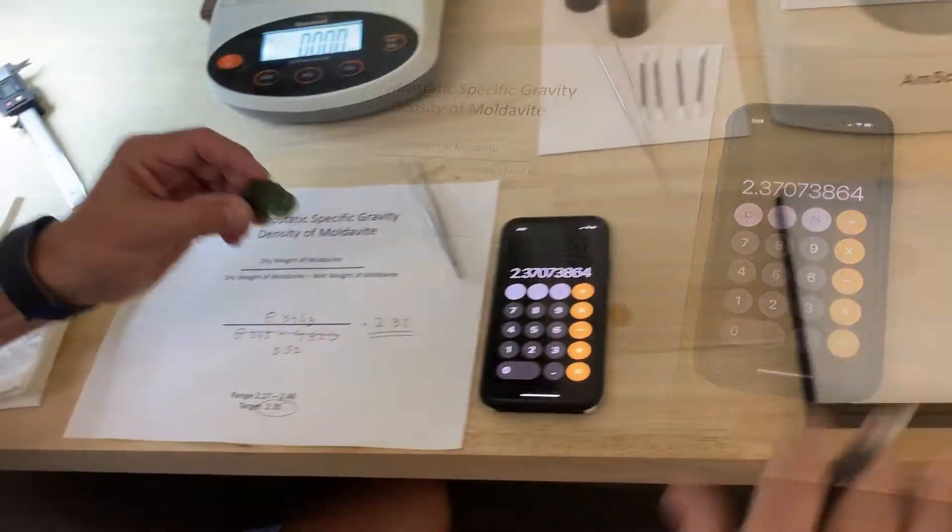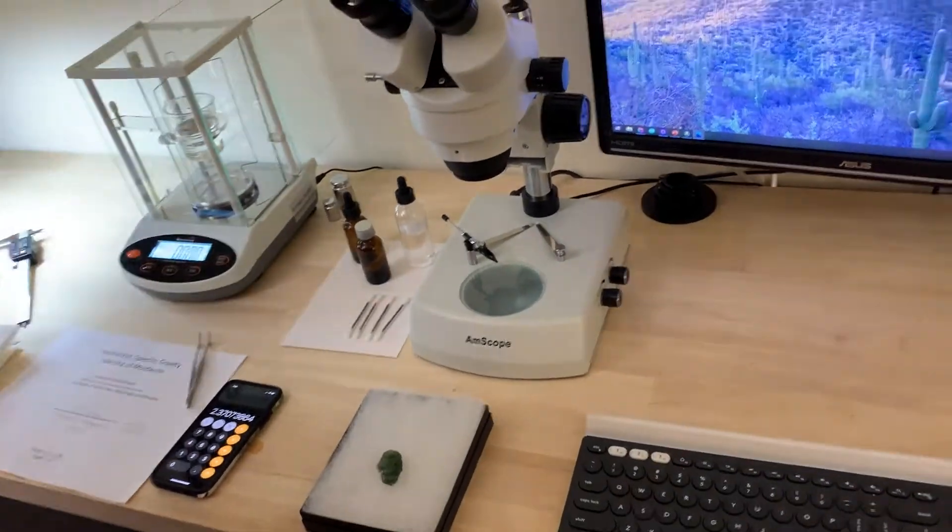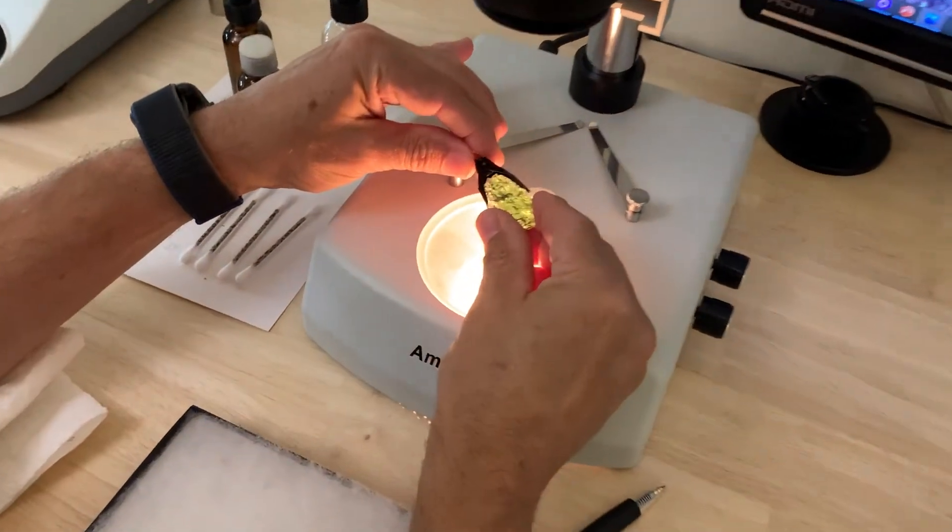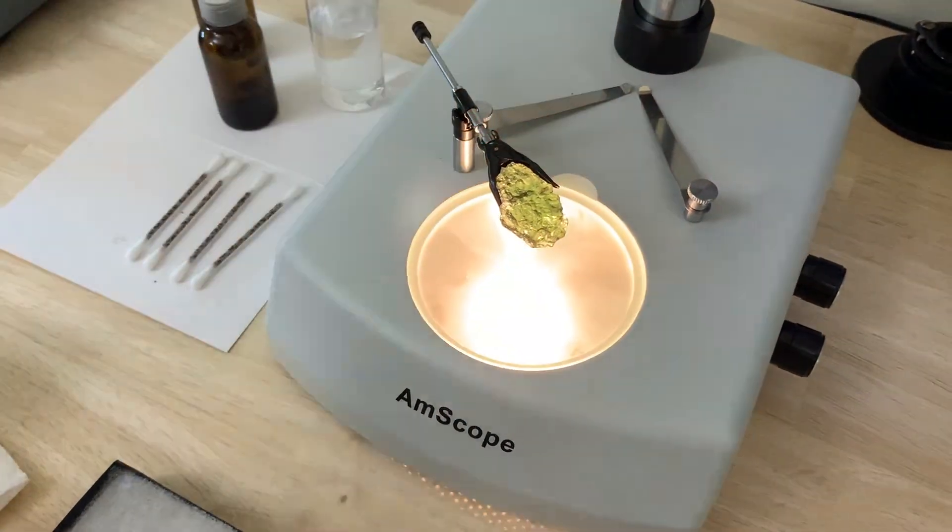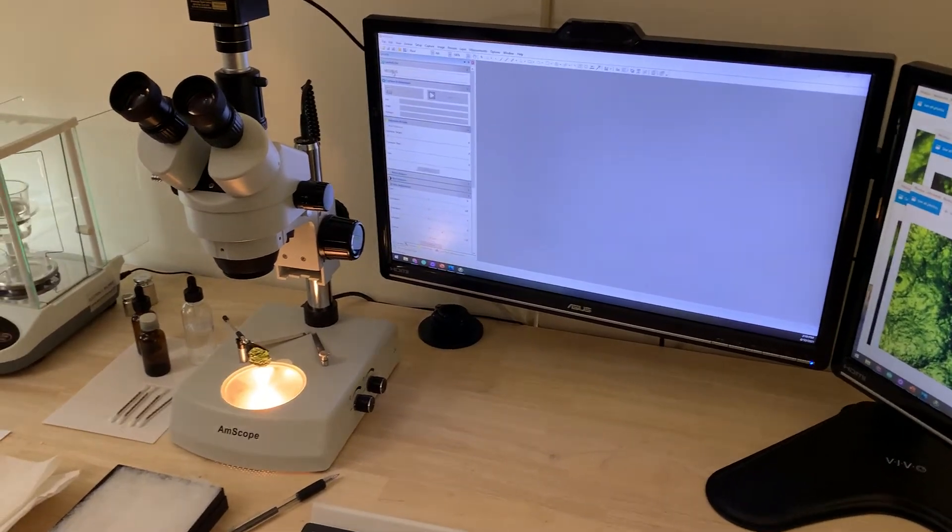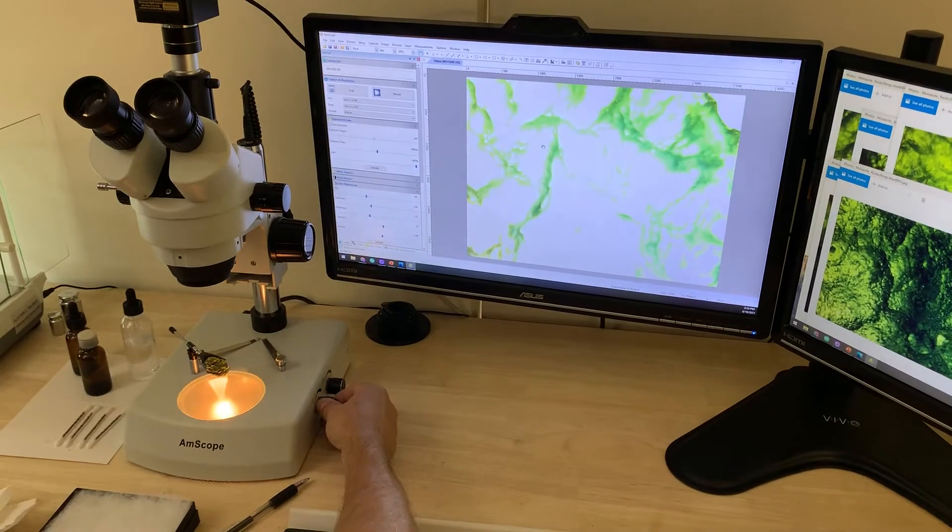Next we're going to move over here and look at it underneath the microscope. Let me dry it off just a little bit and put it under the microscope right there. What we do is project this image up onto the computer right here. Here we go, this is at a very low magnification.